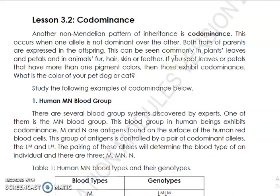Hello everyone, welcome to our channel. Let's have Lesson 3.2: Co-dominance. Co-dominance is another non-Mendelian pattern of inheritance. This is second to incomplete dominance, which we discussed previously. This occurs when one allele is not dominant over the other, meaning both traits of the parents are expressed in the offspring.